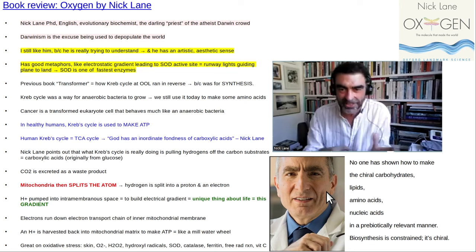I myself believe in intelligent design. I majored in evolutionary biology at Stanford, was an A-plus student — because the more you study this stuff, the more it's like it has to be God. One thing James Tour says: no one has shown any way possible to make the chiral carbohydrates, lipids, amino acids, or nucleic acids in a prebiotically relevant manner. Biosynthesis is constrained — it's chiral. For example, an amino acid has the L version, the levo version. Molecules have to be made correctly or they don't function in biological systems.